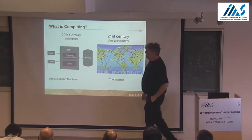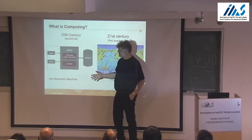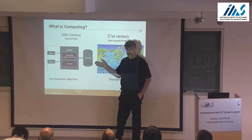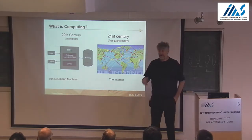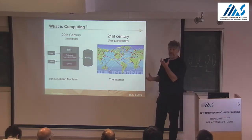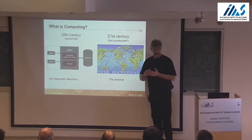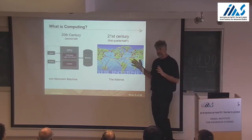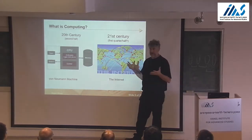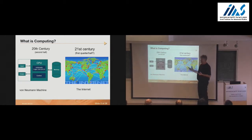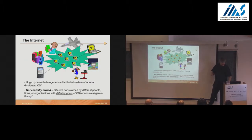I will start with an extremely high-level view: what is computing from the point of view of AGT? What is the interesting thing about computing that we do in algorithmic game theory that's different from the rest of computer science? The classical model of a computer was an input, some kind of CPU, and you put in input and get output. In the 21st century, we're more interested in the interaction between different computers.